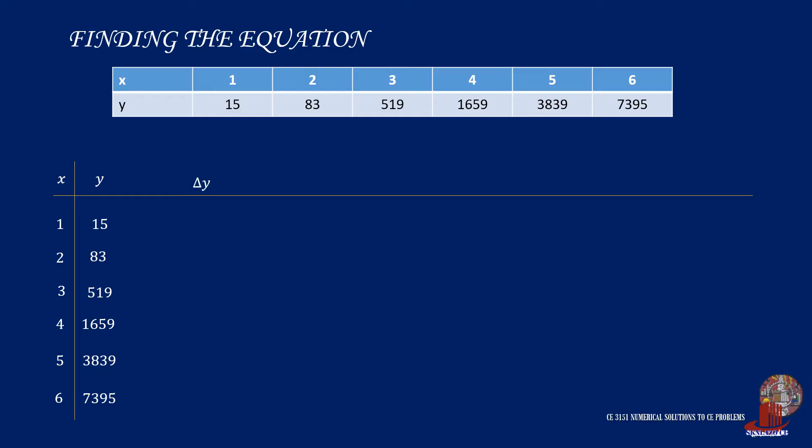Let's fill delta Y. Start with 83 less 15, which is 68. Then 519 less 83 is 436. We continue with 1659 minus 519, and that is 1140. Then 3,839 less 1,659 as 2,180. And last, 7,395 minus 3,839 is equal to 3,556.